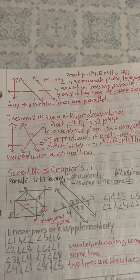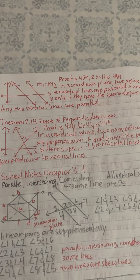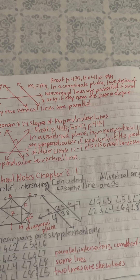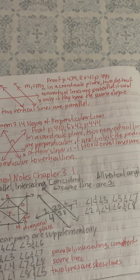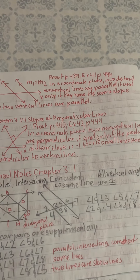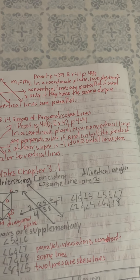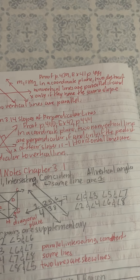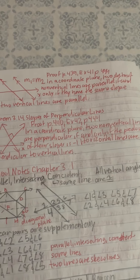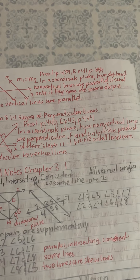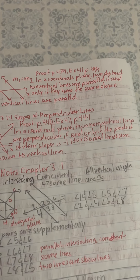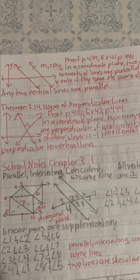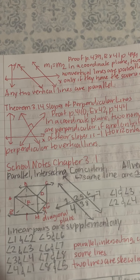Theorem 3.14, Slopes of Perpendicular Lines: In a coordinate plane, two non-vertical lines are perpendicular if and only if the product of their slopes is negative 1. Horizontal lines are perpendicular to vertical lines. Proof. Example: P1440, X42, P444.